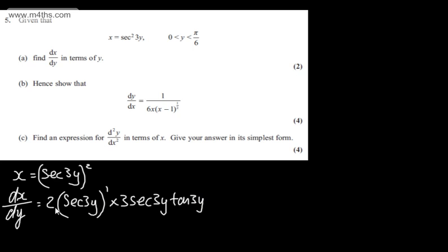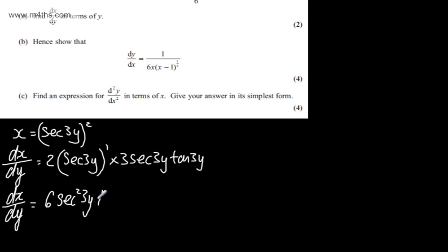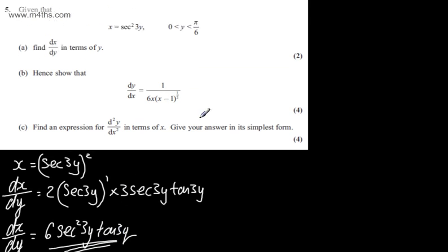We're not asked to tidy this up, but tidying it up: dx/dy is going to be 2 times 3, which is 6, times sec(3y) multiplied by sec(3y) — giving sec squared(3y) — multiplied by tan(3y). So that is now in its simplest form. For two marks you might want to leave it in the unsimplified form.